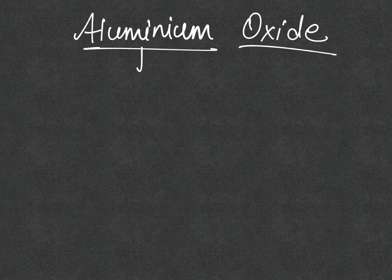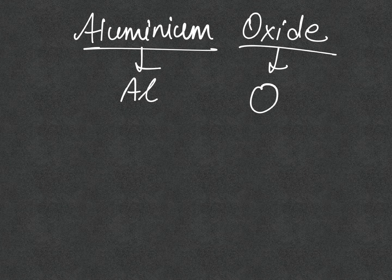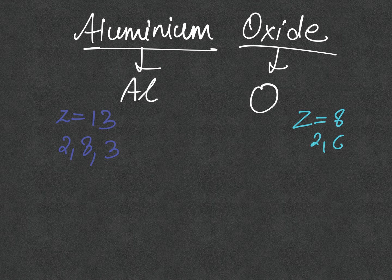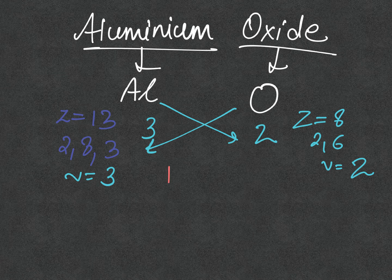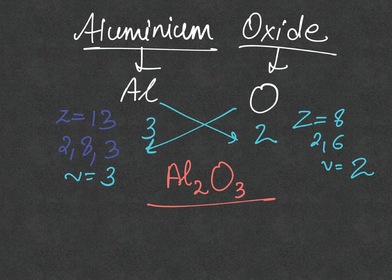Now let's look at aluminium oxide. The symbol for aluminium is Al and for oxide it is O. Aluminium has atomic number 13, configuration 2,8,3, so its valency is 3. Oxygen has configuration 2,6, so its valency is 2. Writing their valencies and performing the crisscross method — 2 goes to the foot of Al and 3 goes to the foot of O — gives us Al₂O₃.